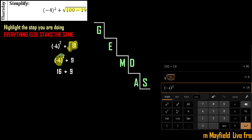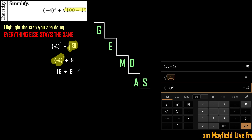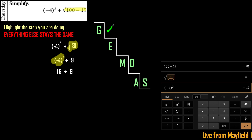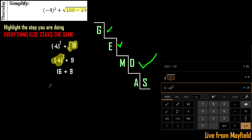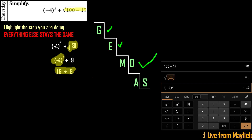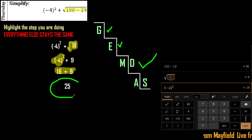We're doing the exponent, so negative 4 squared is 16. Now, do we have any grouping symbols? No. Any exponents? No. Any multiplication or division? No. We do have addition and subtraction, so work left to right. There's only one step: 16 plus 9 is 25, and you're done.